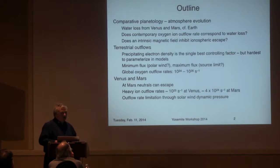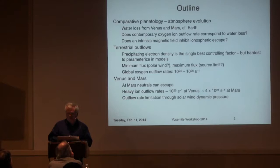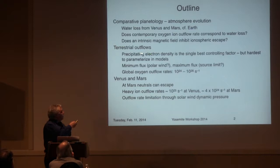And last, the idea of does an intrinsic magnetic field inhibit the loss of oxygen — basically the loss of heavy ions from the planetary ionosphere and hence ultimately from the planetary atmosphere. I will then divert more into discussion of terrestrial outflows and spend a little bit of time on the magnetosphere-ionosphere coupling aspect.